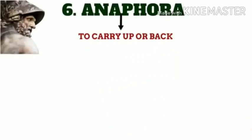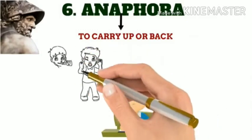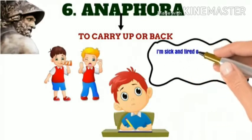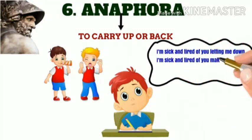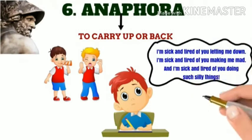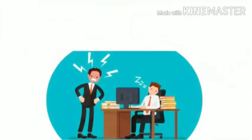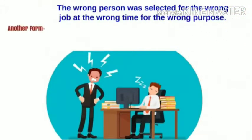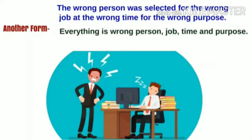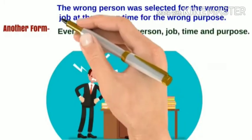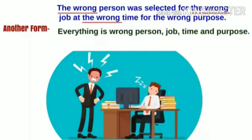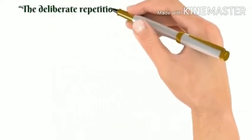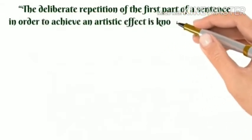Anaphora. The term anaphora comes from Greek, which means to carry up or back. Imagine you are tired of your friend who's making the same mistakes over and over, so you say: 'I'm sick and tired of you letting me down. I'm sick and tired of you making me mad. I'm sick and tired of you doing such silly things.' Through the repetition of 'I am sick and tired,' the phrase has become really emotionally charged. Another example: 'The wrong person was selected for the wrong job at the wrong time for the wrong purpose.' The writer has repeated the word 'wrong' to emphasize something wrong. The deliberate repetition of the first part of a sentence in order to achieve an artistic effect is known as anaphora.